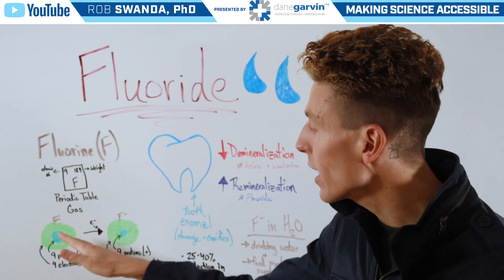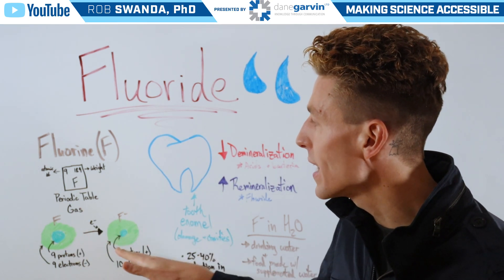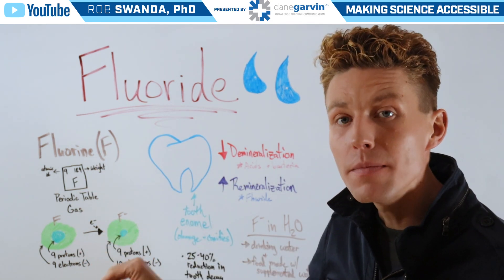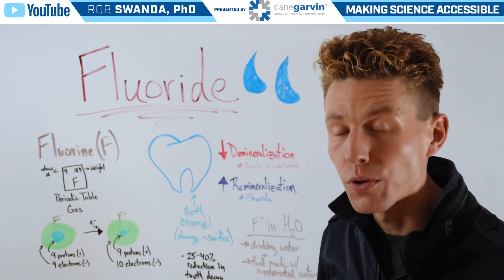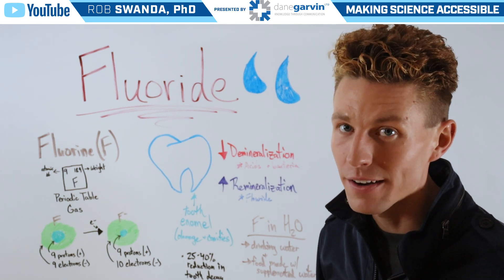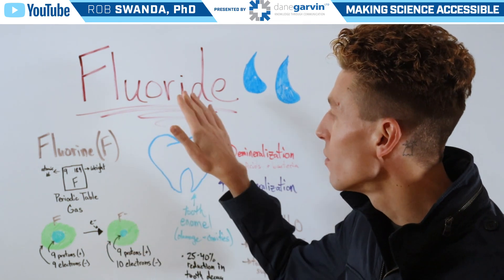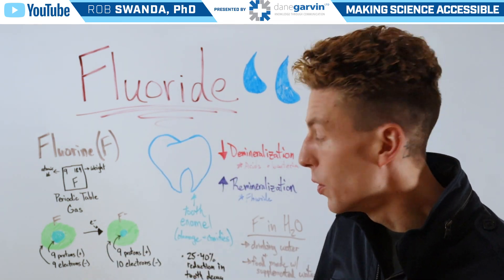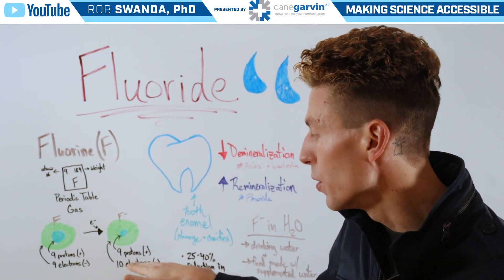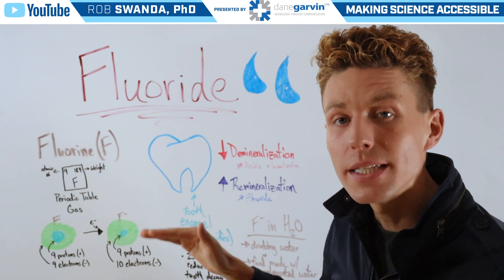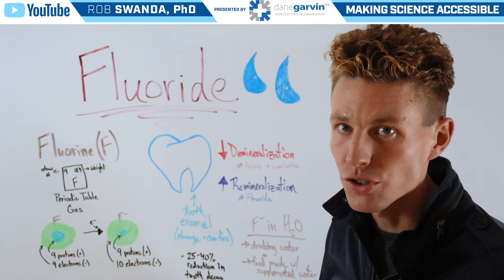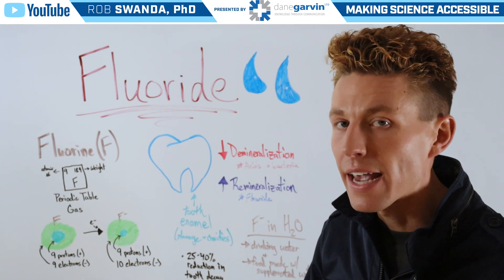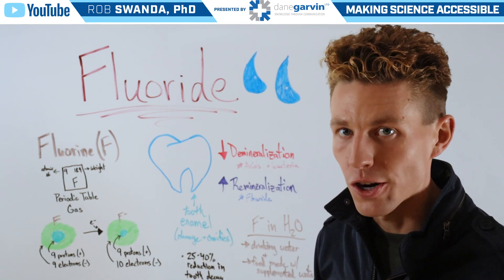But when an extra electron is added, that fluorine atom now becomes a fluorine ion. And that's also known as fluoride, which is now composed of nine protons but ten electrons, giving it that net negative one charge.